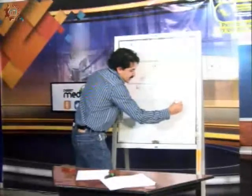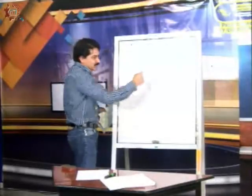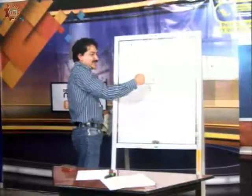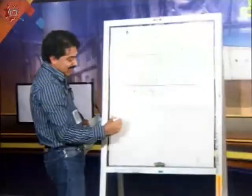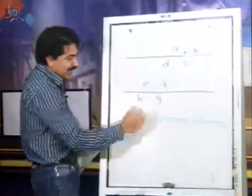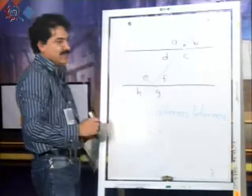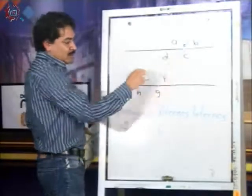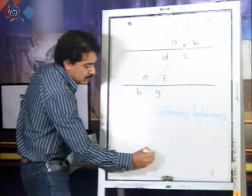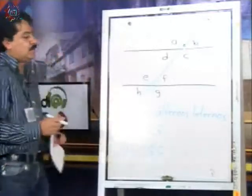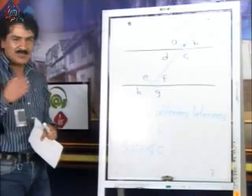Ángulos alternos internos son los que tenemos aquí dentro, como su nombre les llama internos, alternos, y también tienen el mismo valor. Ángulo D igual al ángulo F. Ángulo E igual al ángulo C. Esos son nuestros ángulos alternos internos. Vamos a pasar a unos ejemplos.